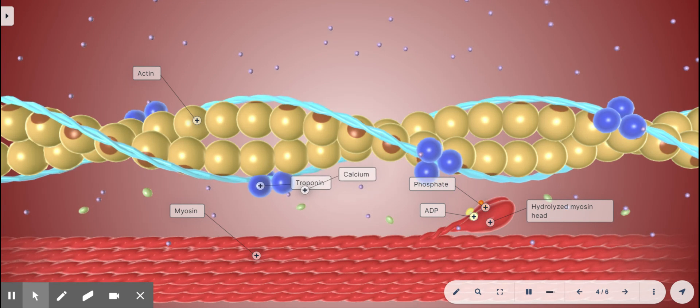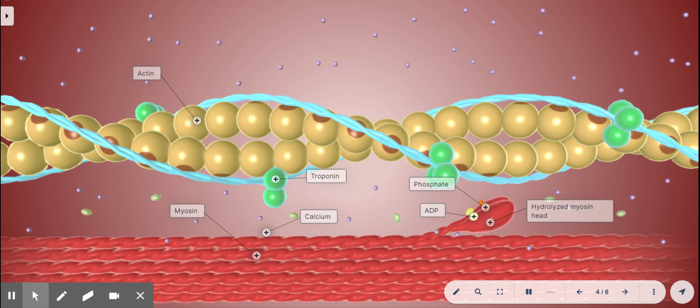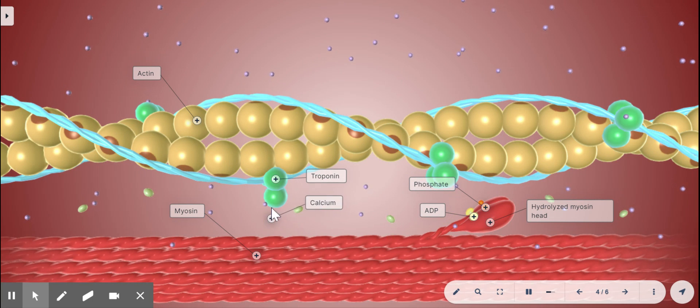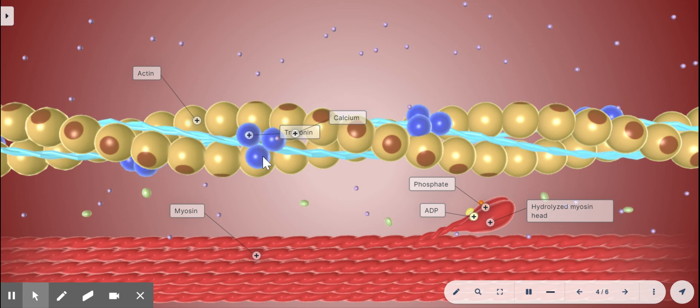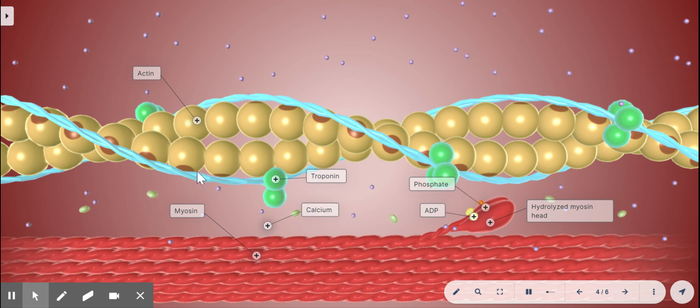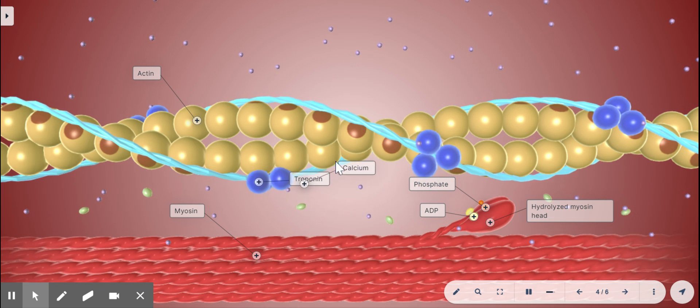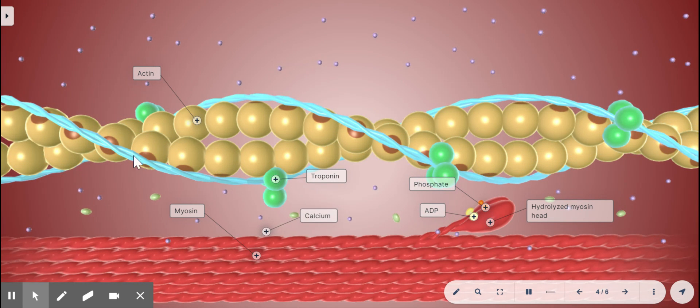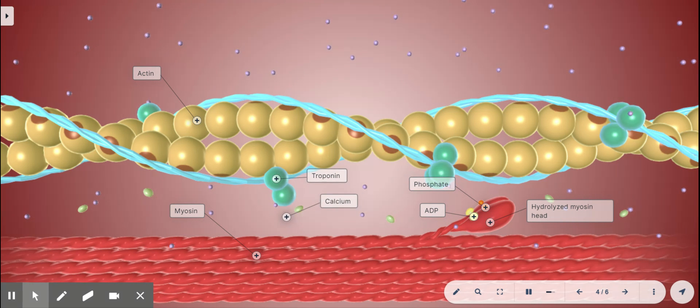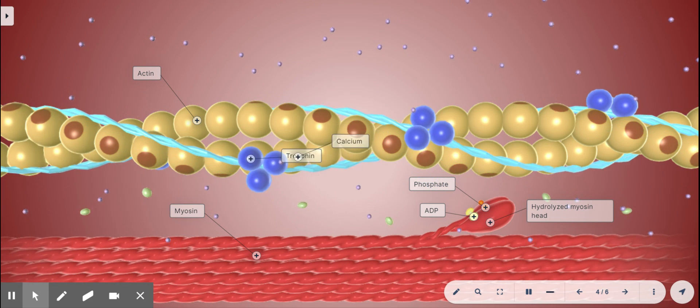Remember how the calcium was released from the sarcoplasmic reticulum in the last view? In this view, you can see how the calcium binds to troponin along these fibers, these aqua colored fibers that are called tropomyosin. Tropomyosin is ordinarily covering these little brown spots that are called myosin binding sites.